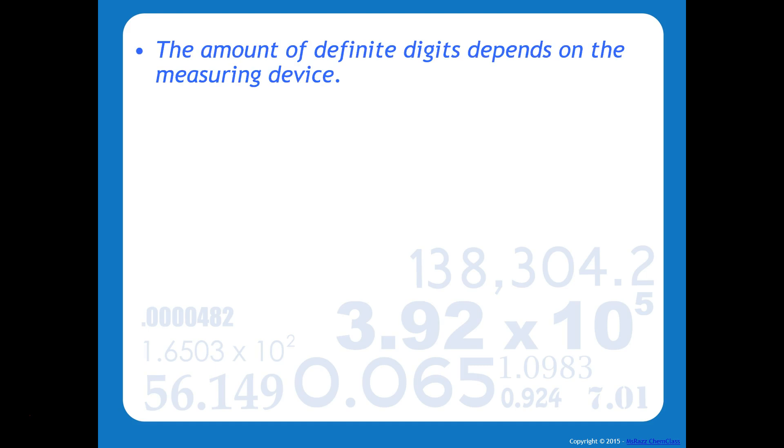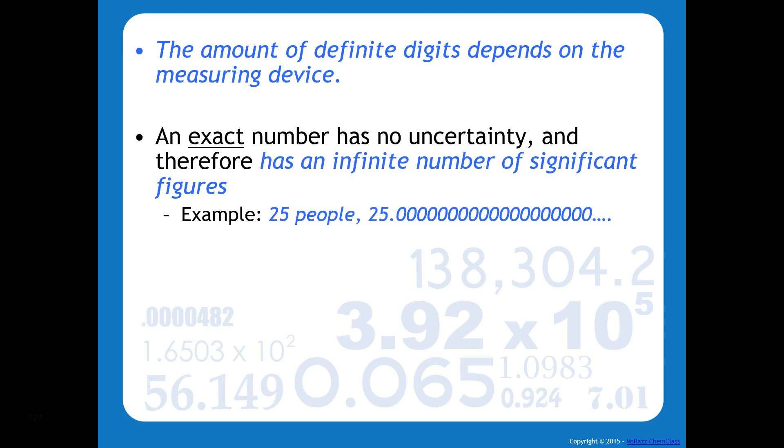The amount of definite digits depends on the device. So an exact number is a number that has no uncertainty and therefore has an infinite number of significant figures. Anytime you're counting something like 25 people or pencils, this is going to be an exact number.